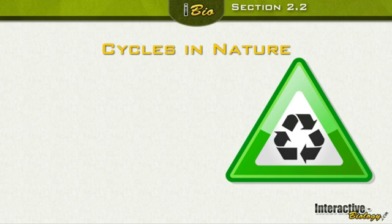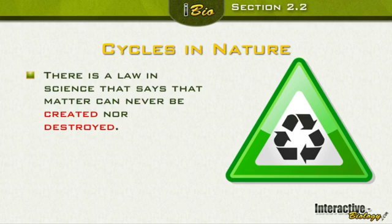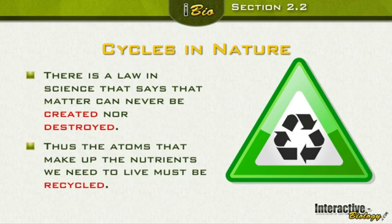Let's talk about cycles in nature. There's a law in science that says matter can never be created nor destroyed. The stuff that we see comes from stuff that was already there. So the atoms that make up the nutrients we need to live must be recycled. We're going to go through some of these cycles and see examples of what we have in nature.